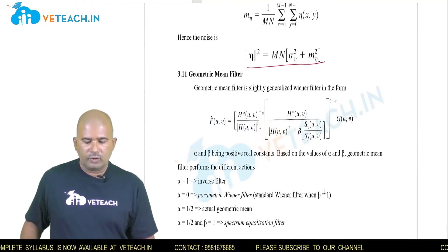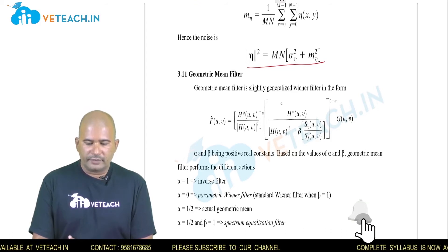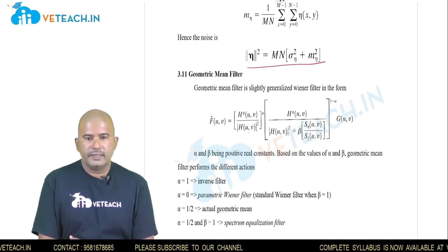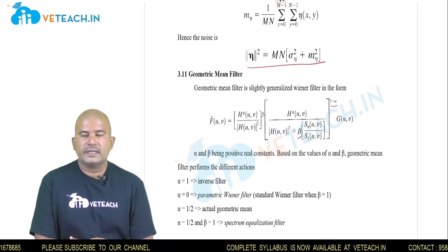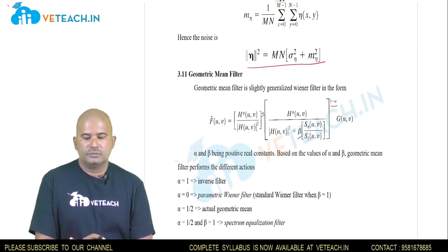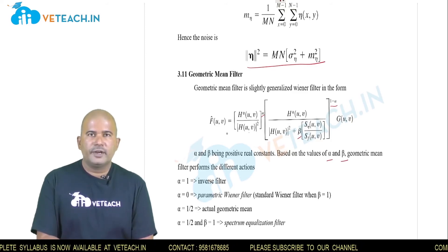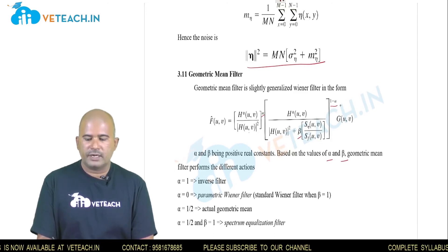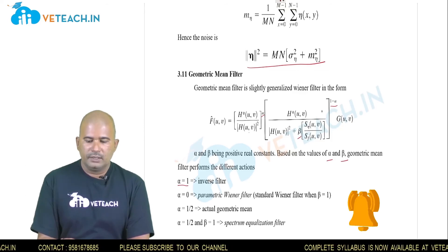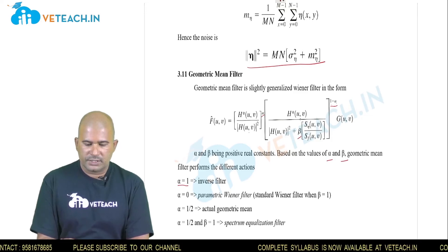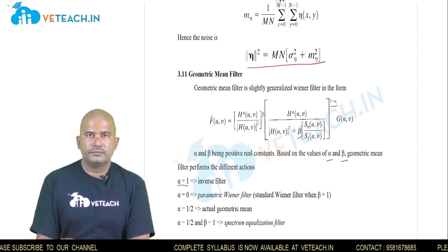One more filter is the geometric mean filter. A generalized version of the Wiener filter is given in the form: H*(u,v) divided by |H|² raised to alpha, multiplied by H divided by |H|² plus beta, raised to the power (1 minus alpha). Two parameters, alpha and beta, are positive constants. Based on the values of alpha and beta, this geometric filter can be used for different purposes. For example, if alpha equals 1, the power term becomes 0, giving H* divided by |H|² times G(u,v) — the simple inverse filter.